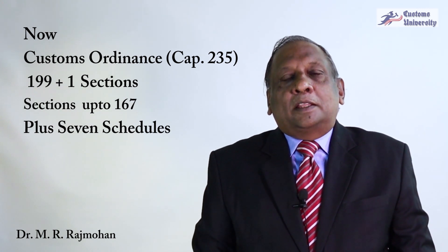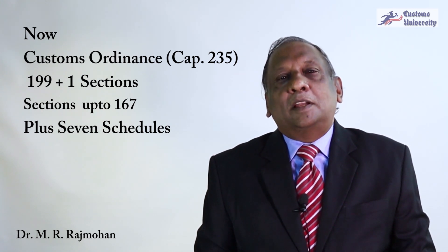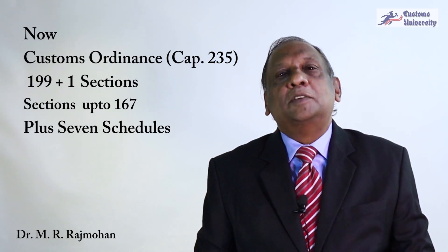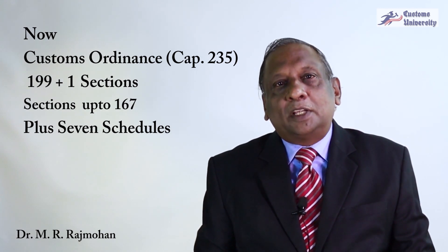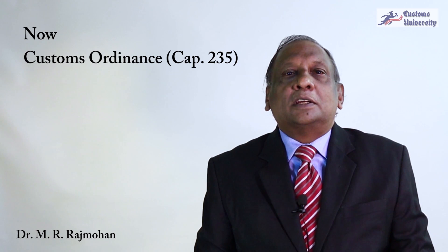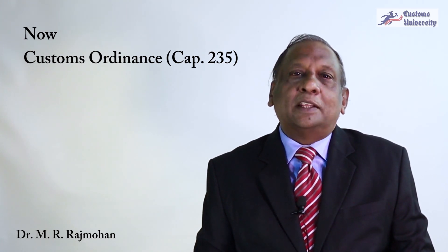Customs Ordinance Chapter 235 as amended now comprises around 199 sections plus one which stays beyond the customs ordinance, and 7 schedules. For the purpose of this lecture we will be referring to Chapter 235, but when it comes to certain cases we will be referring to Customs Ordinance Chapter 185 — I will explain that later.